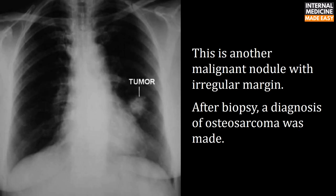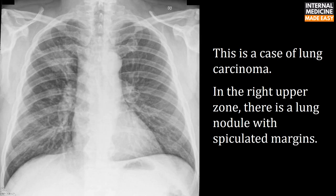This is another malignant nodule with an irregular margin; after biopsy a diagnosis of osteosarcoma was made. This is a case of lung carcinoma in the right upper zone showing a lung nodule with spiculated margins.